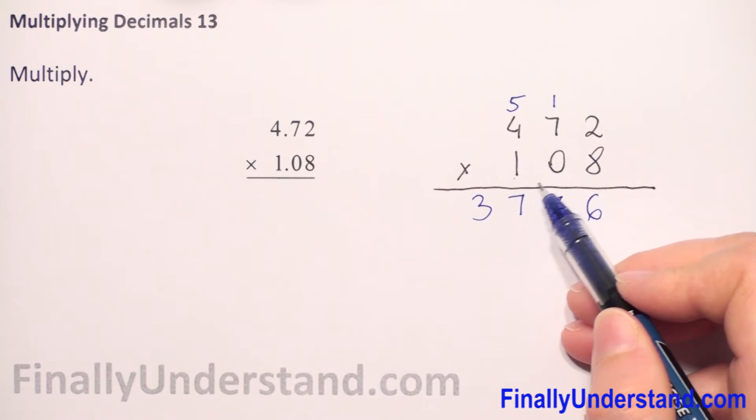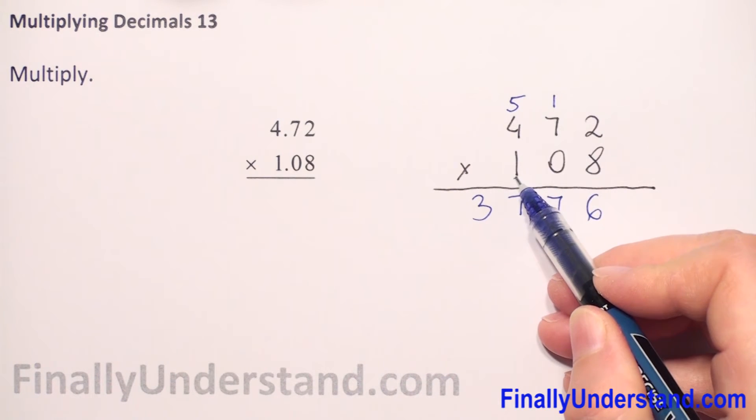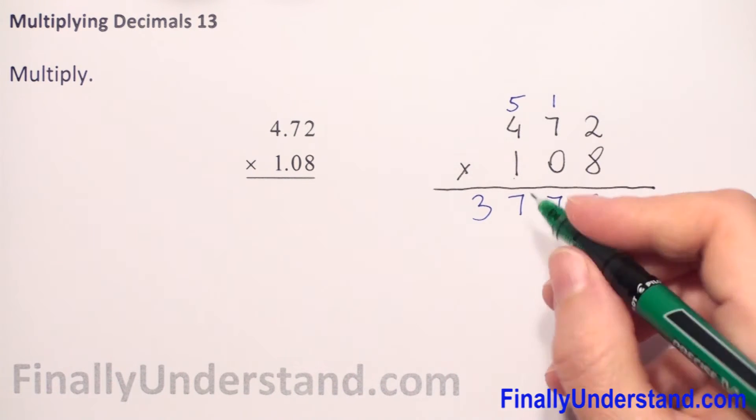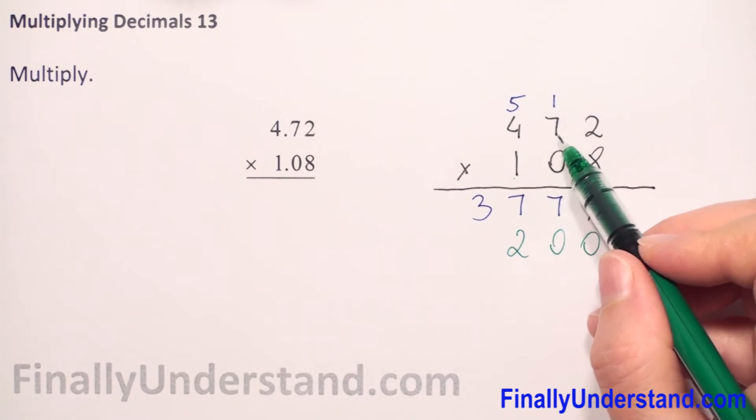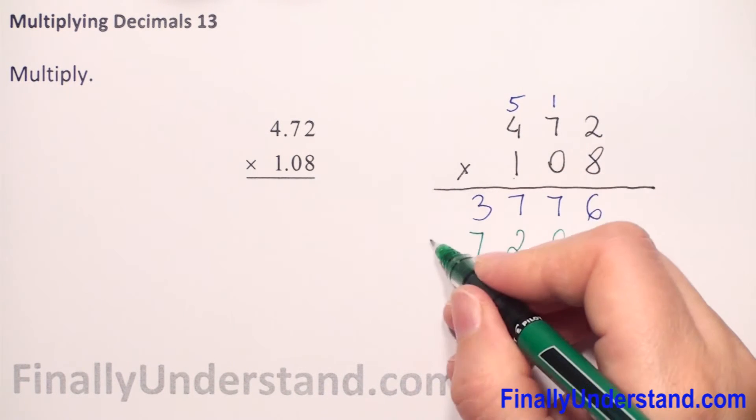We have 1 and because 1 is in the third column so it's like 100 times 2. 100 times 2 is 200. So we have to write 200. And now 1 times 7 is 7. 1 times 4 is 4.